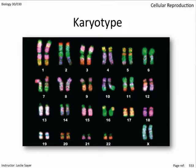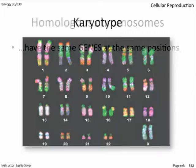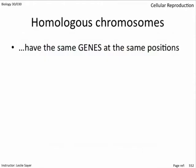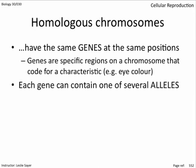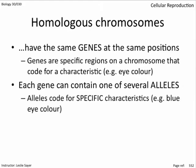When you look at each chromosome, what's missing? The sister chromatid. The banding patterns are not necessarily genes — you can't actually see genes. The bands merely represent changes in density of the supercoiled DNA at that particular region. Homologous chromosomes have the same genes at the same positions. Genes at specific regions on a chromosome code for a characteristic like eye color, and each gene can contain one of several alleles that code for specific characteristics, for example blue eye color.